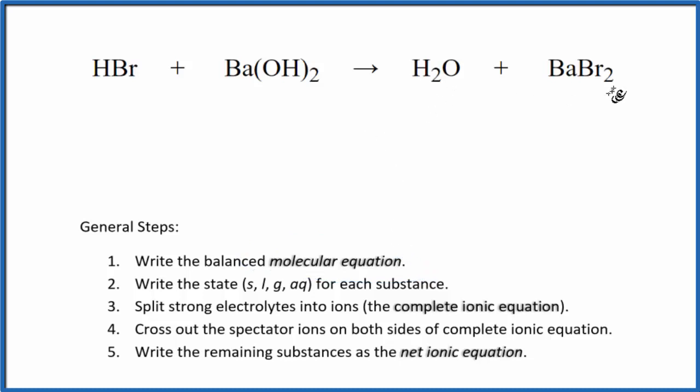When we look at this molecular equation, I've got two Brs here and just one here. Let's put a 2 here, and then I've got two oxygens here. Put a 2 here. That balances the hydrogens. So this is the balanced equation for HBr plus Ba(OH)₂.